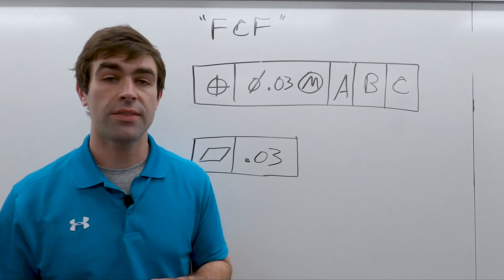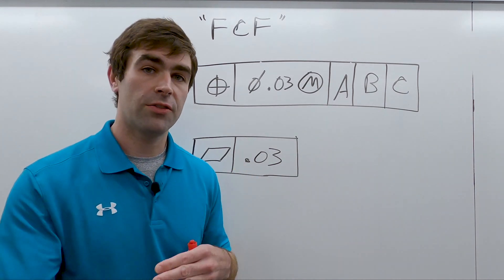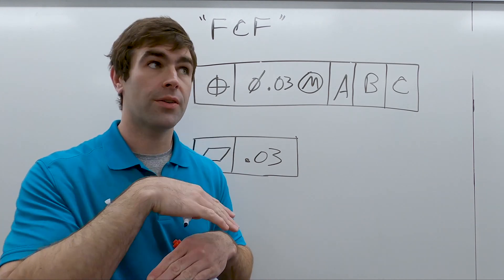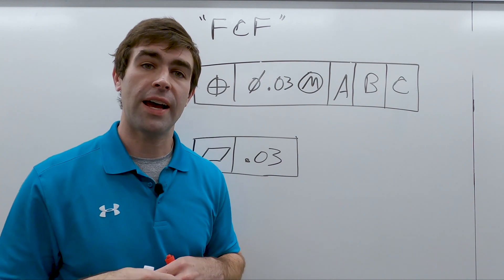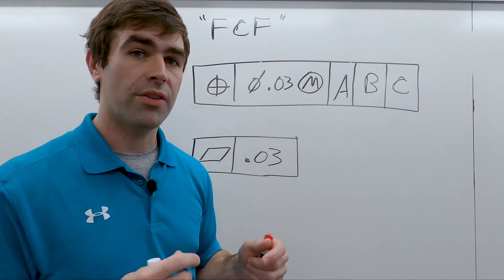If you have a flatness tolerance with a tolerance zone of 30 thou, then it's just the distance between two parallel planes in which the surface of the part must lie. So difference between two planes, diameter of the tolerance zone.